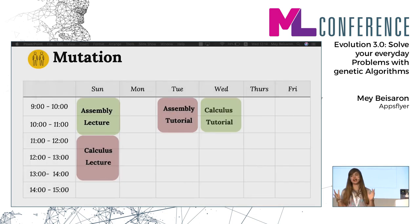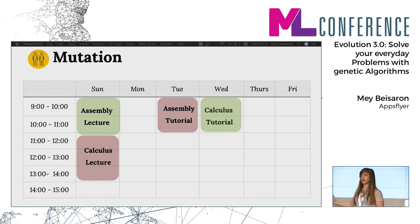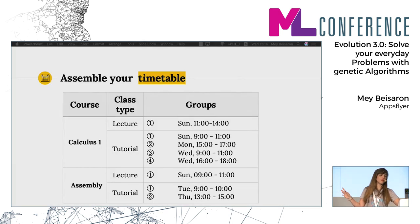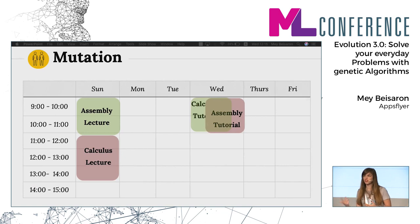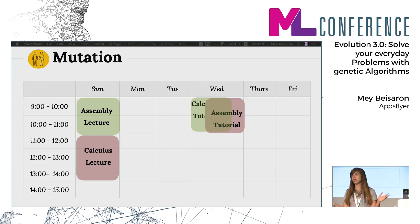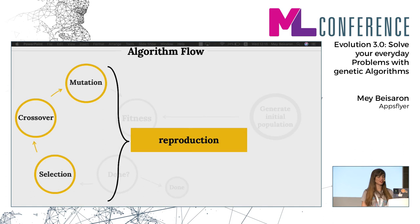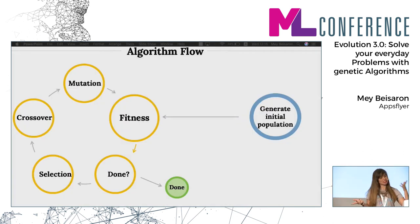Back in the timetable world, mutation means taking one class and randomly picking another available day for it. For example, if we have the assembly tutorial on Tuesday, we go back to the list of courses and take the other option — say, Wednesday. It might give a worse solution, but that's not the point. The idea is to expand the range of solutions available. And that's the reproduction part — that's the entire algorithm.